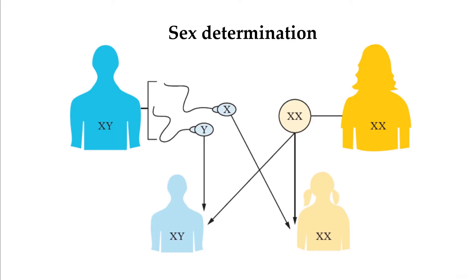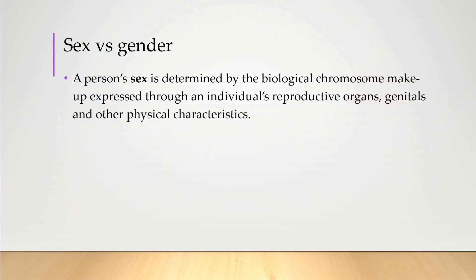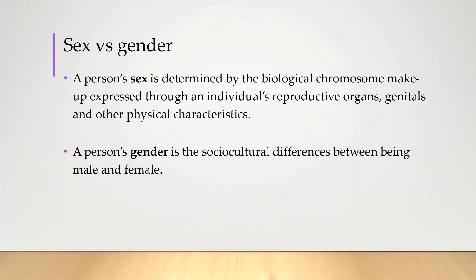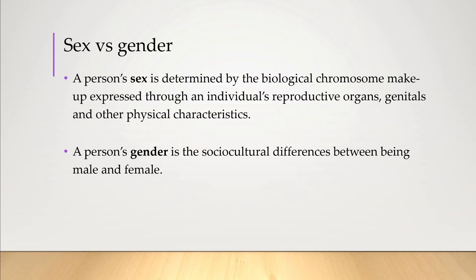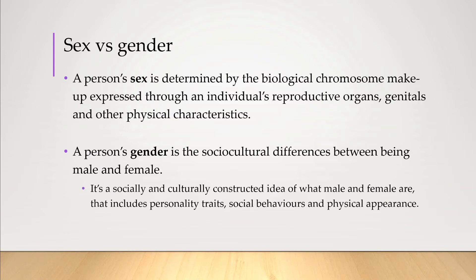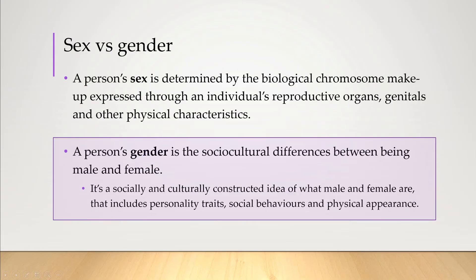In addition to the term sex, we might also describe a person's gender as being the social-cultural differences between being male and female. It's said to be a socially and culturally constructed idea of what male and female are, that includes personality traits, social behaviors, and physical appearance. So while we might study sex in biology, here in social psychology we're interested in gender, and in particular the expectations that we all seem to have about gender roles.